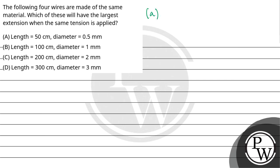First wire, aapke liye L by d square is equal to 50 cm upon diameter 0.5 mm hai, toh 0.05 cm ho jayega. So this will be 20 into 10 raised to the power 3 per cm.